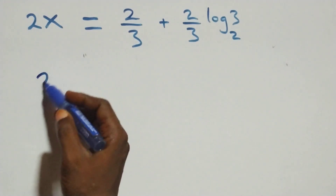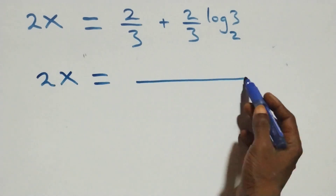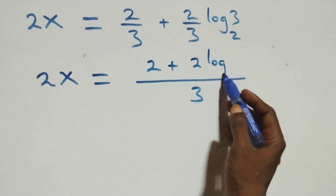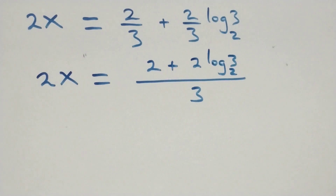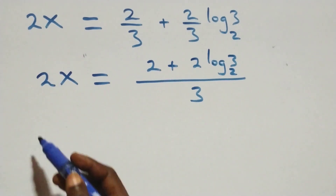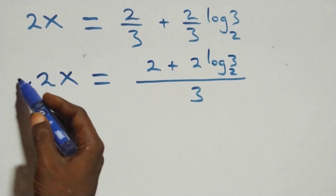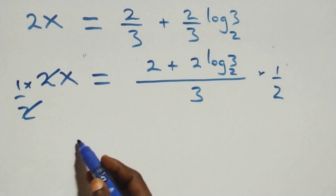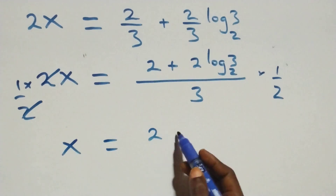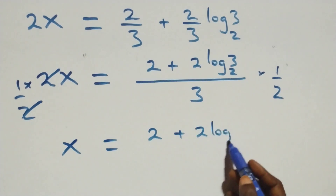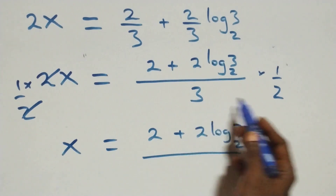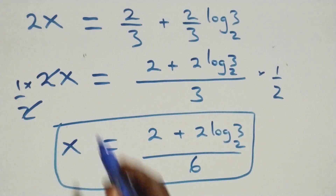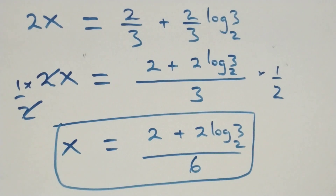We bring this together as one fraction with denominator 3: 2x equals (2 plus 2 log 3 base 2) over 3. Multiplying both sides by 1/2, the 2s cancel and x equals (2 plus 2 log 3 base 2) over 6. Let's check if this satisfies the given problem.